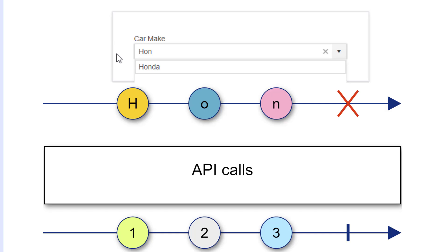For example, in this combo box, when we begin typing the word Honda, for each keystroke, we're making an unnecessary API call.